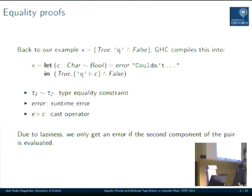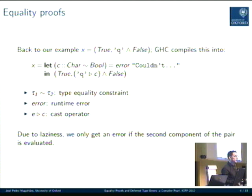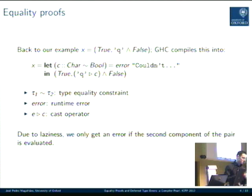To see how this works, I'll show you a bit of how GHC actually compiles this code, back to our example of this pair. GHC compiles this into a let with some evidence for the fact that `Char` is equal to `Bool` — the tilde here is a type equality constraint. But of course there's no evidence for that equality because it's bogus, so it just fills in an error with the actual type error message. Then it puts a cast around this character with the coercion that's been generated. Because of laziness, we'll only get an error if this second component is evaluated.